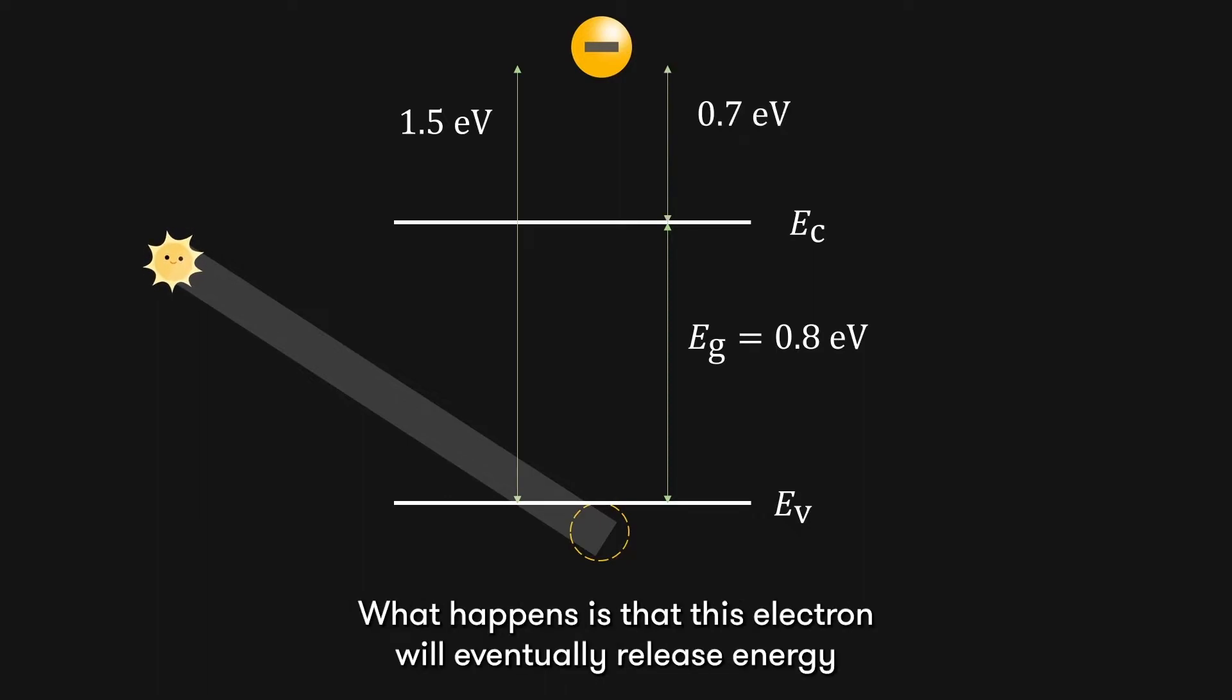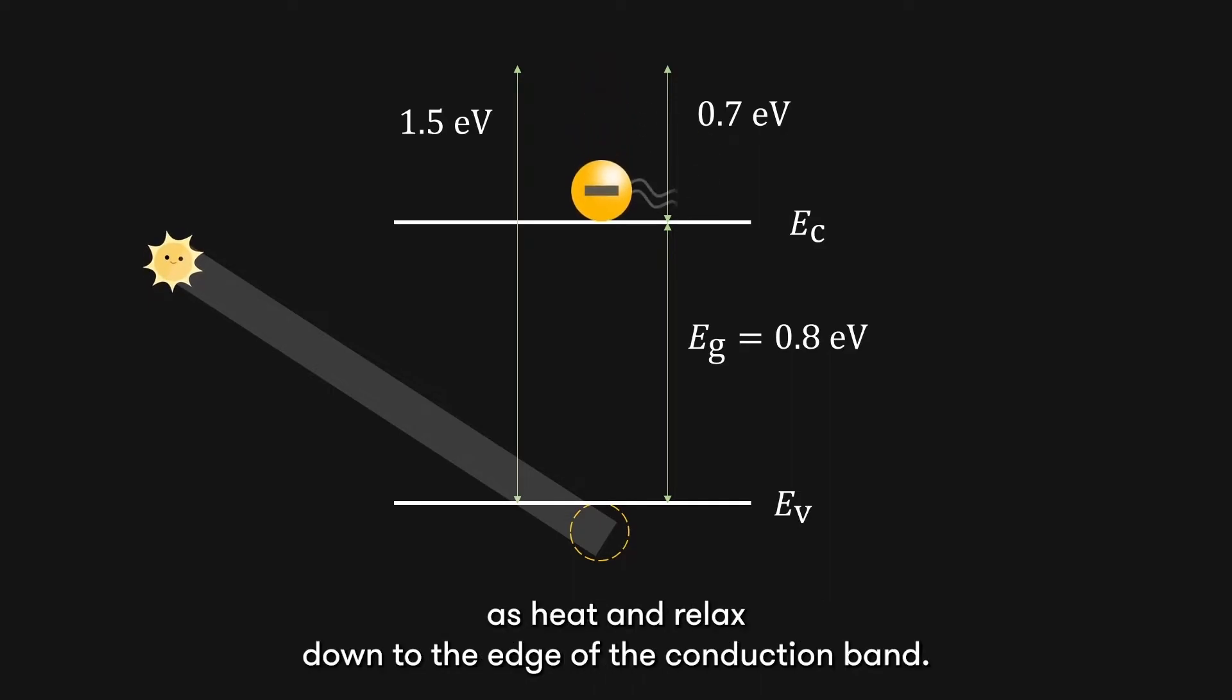What happens is that this electron will eventually release energy as heat and relax down to the edge of the conduction band. This energy is wasted as heat and will not contribute to power whatever the solar cell is trying to power up.